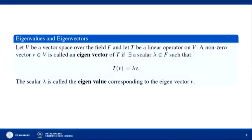Let V be a vector space over the field F and T be a linear operator on V, that is, T is a linear transformation from V to V. A nonzero vector v belonging to V is called an eigenvector of T if there exists a scalar λ belonging to F such that Tv = λv. So, λ is called the eigenvalue and the corresponding eigenvector is v.